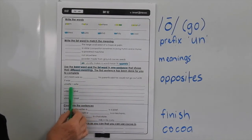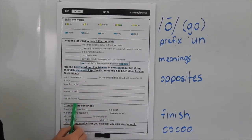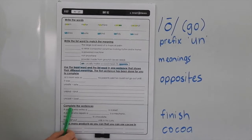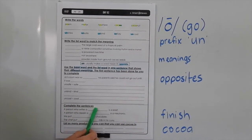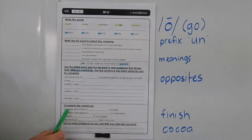You've got to create your own sentences for unsafe/safe, unkind/kind, uncool/cool. Complete the sentences down here — we discussed this yesterday when we went through the meanings.